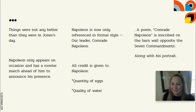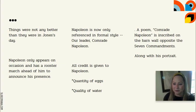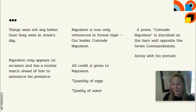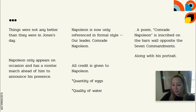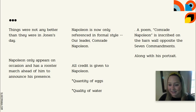Now there is a black rooster that parades in front of Napoleon announcing his presence, much like someone would do for a king or royalty. Napoleon is only referred to in his formal style — nobody simply states Napoleon. Instead, they must fully introduce him as 'Our Leader, Comrade Napoleon.' This signals an imbalance of power: he is not equal, he has special privileges, and he capitalizes on them.